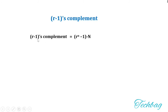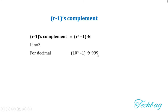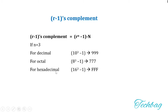The formula to calculate R-1's complement subtracts the given number from R^n minus 1. If n equals 3, for the decimal number system, R^n minus 1 becomes 999 (10^3 = 1000, minus 1 = 999). Similarly, for the octal number system, 8^3 minus 1 becomes 777. For hexadecimal, 16^3 minus 1 becomes FFF. For binary, 2^3 minus 1 becomes 111 (since 2^3 = 8, and 7 in binary is 111).